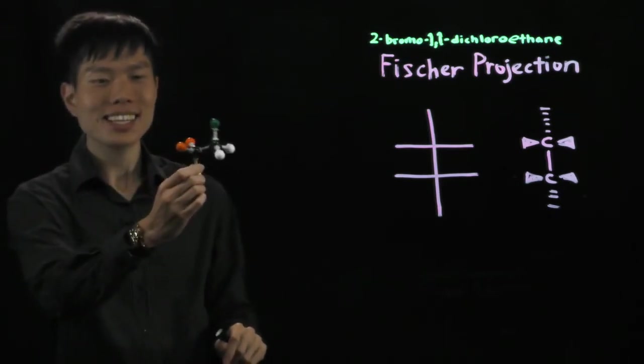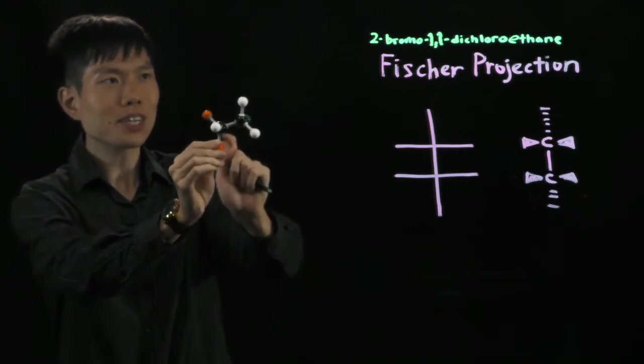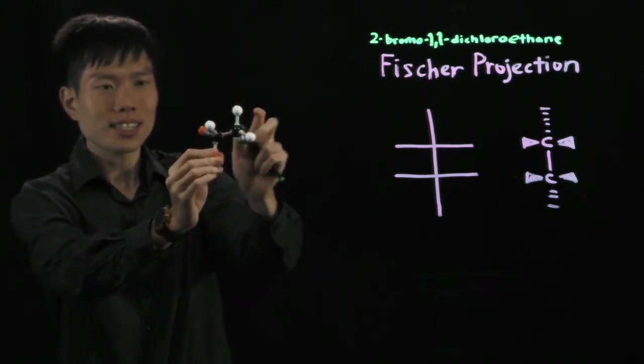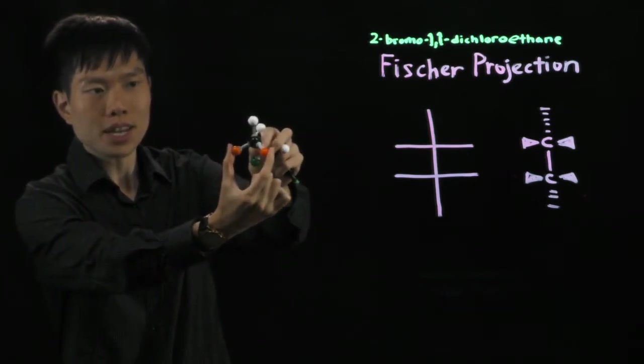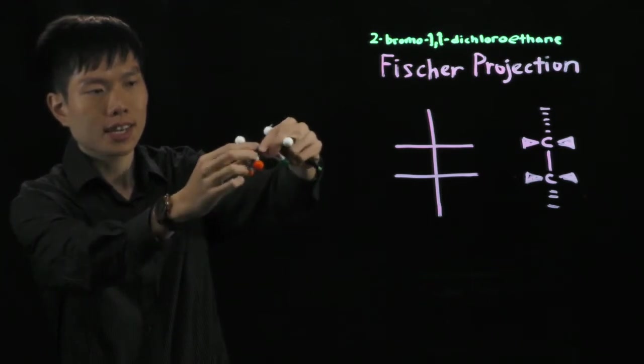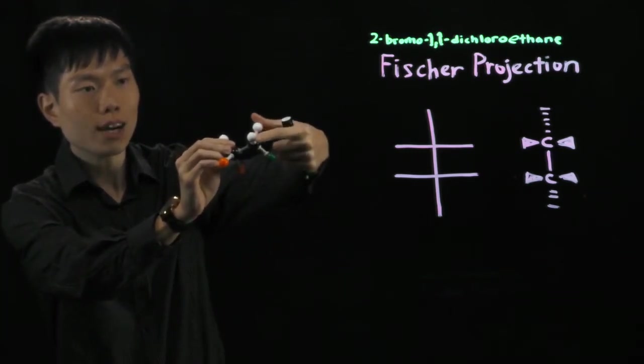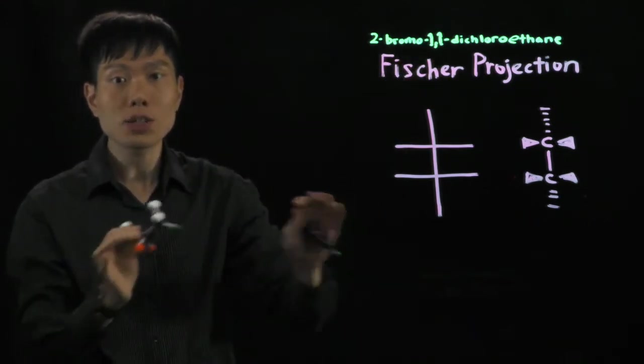Now in my hand, you see this molecule, its name, and there are two carbons here. Notice that each of these carbons connects to two of the same thing. From this carbon to the front, both are chlorine. At the back carbon, there are two hydrogens that connect it, which means to say that in this molecule, there are no chiral centers.